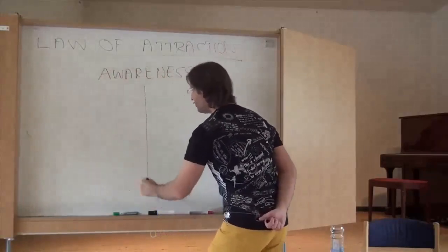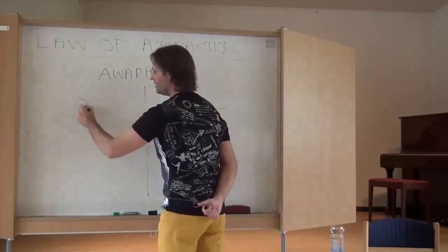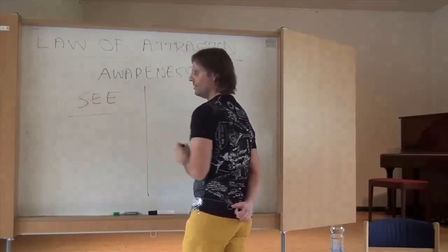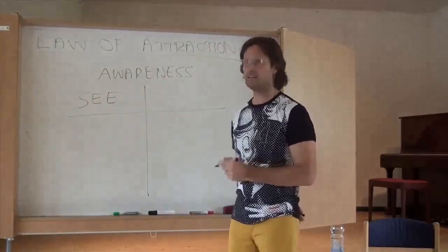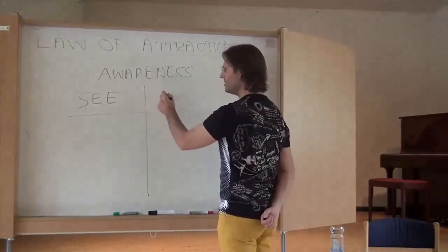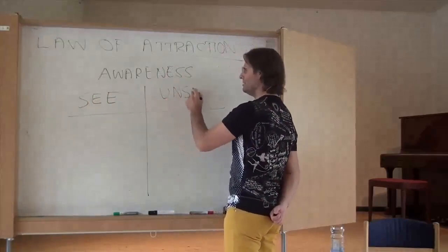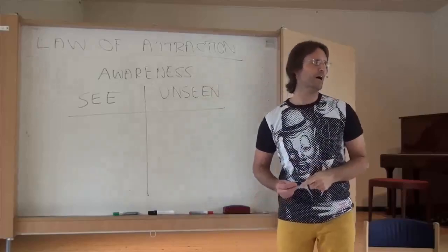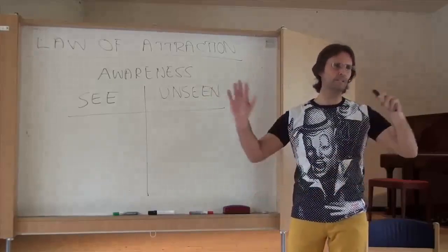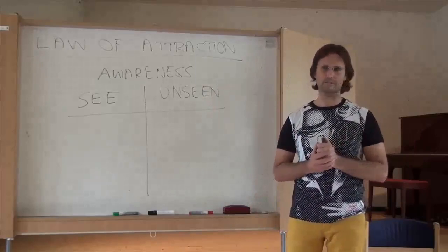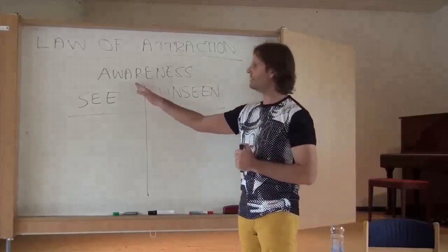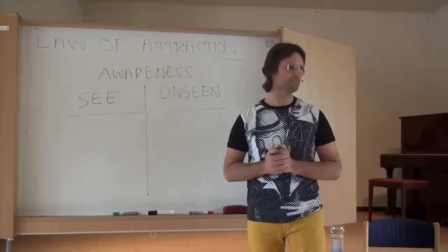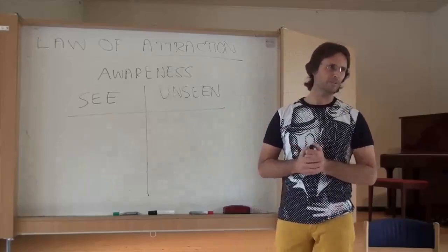We can draw two columns. There are the things in ourselves that we see and there are the things in ourselves that are unseen. In other words, we are unaware of them, completely unaware. And then there are the things in ourselves that we see or even that we think we see.